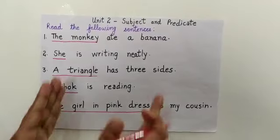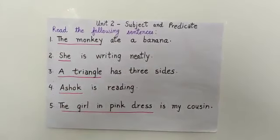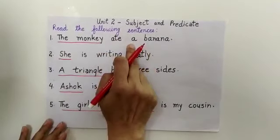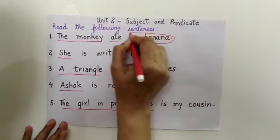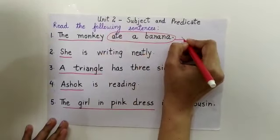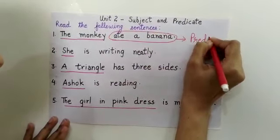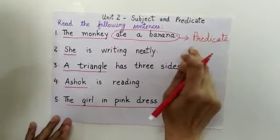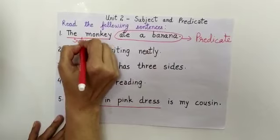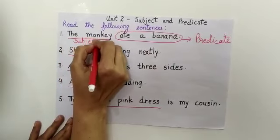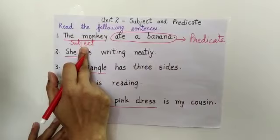Now, what about the remaining part of the sentence? It also has a name. Like this, in the first sentence, 'ate a banana' — this group of words is called the predicate. And the predicate always tells us about the subject.